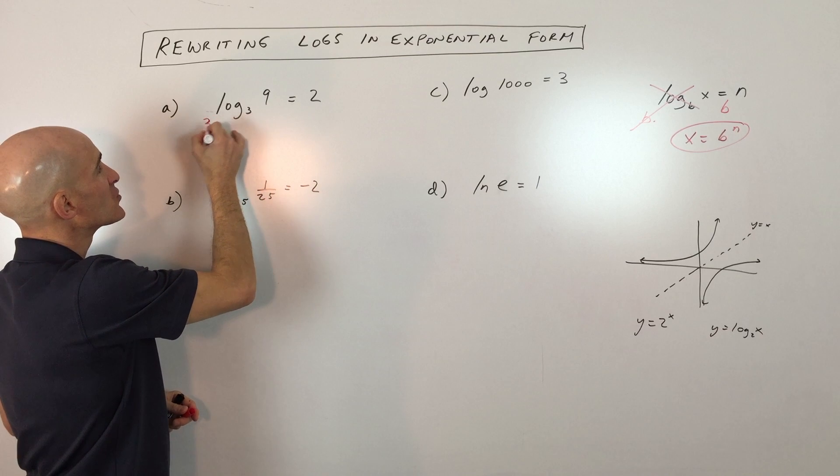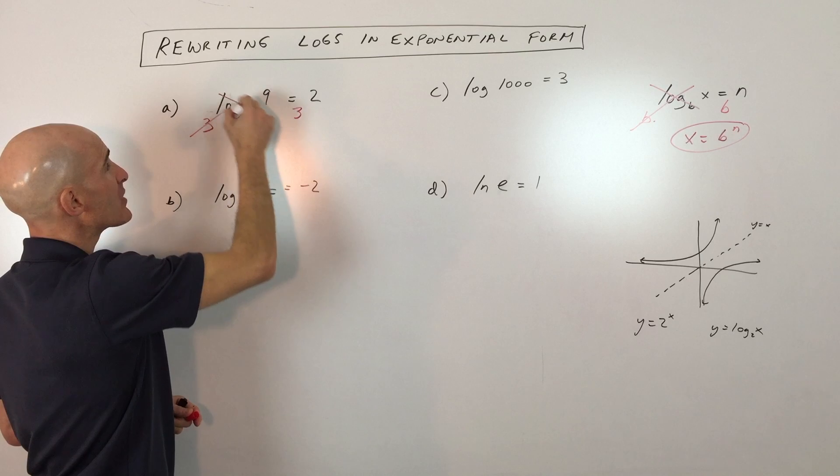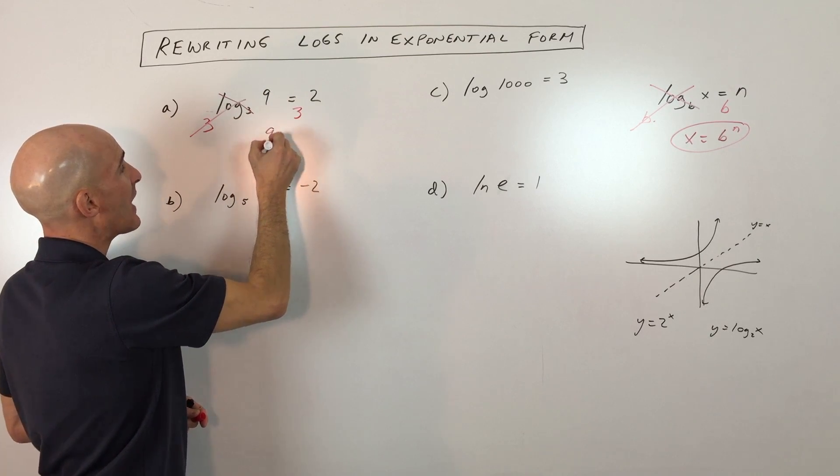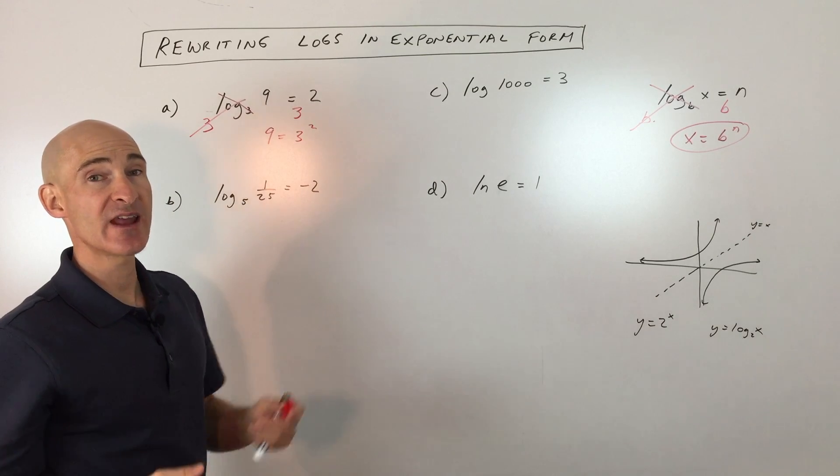So for example here, what we're going to do is exponentiate using base 3. These are inverses and now you can see that 9 is equal to 3 squared, which is of course true. We've just rewritten it in exponential form.